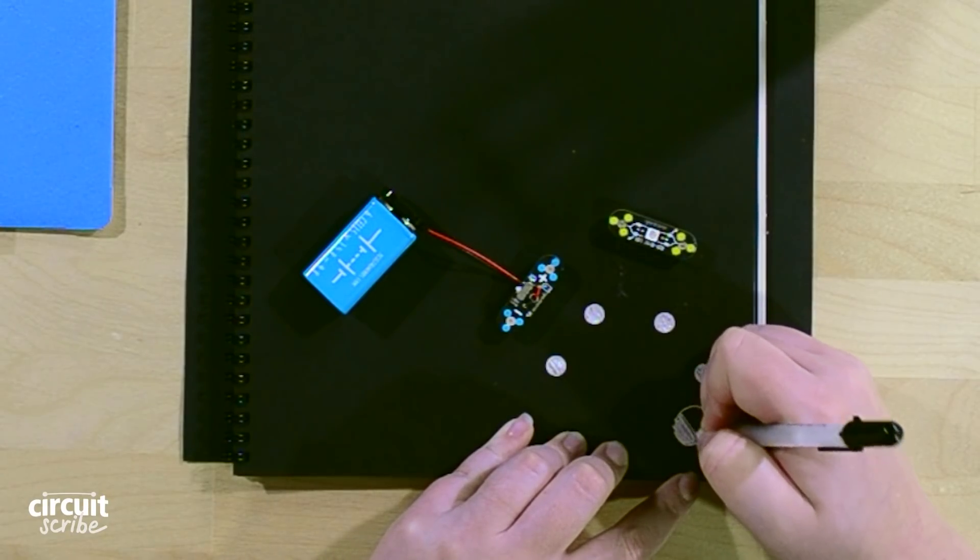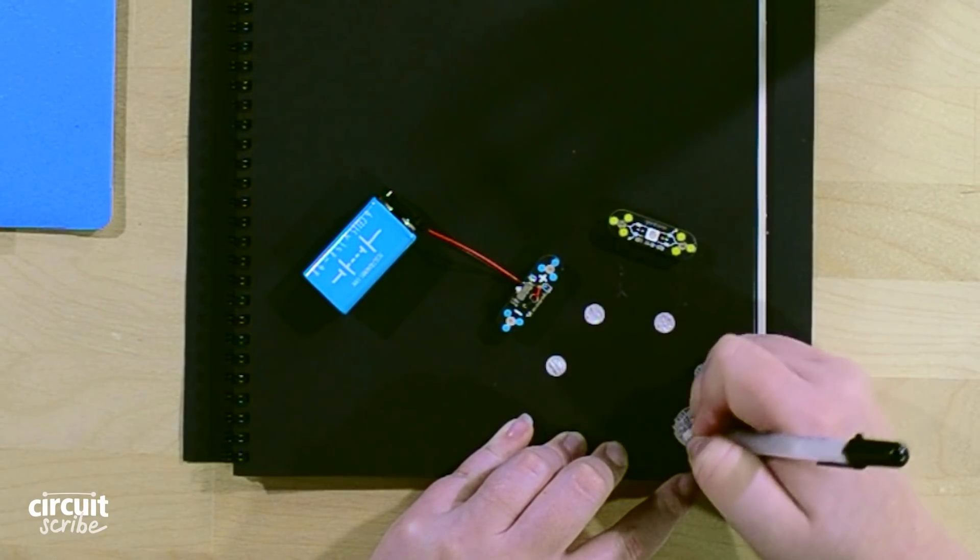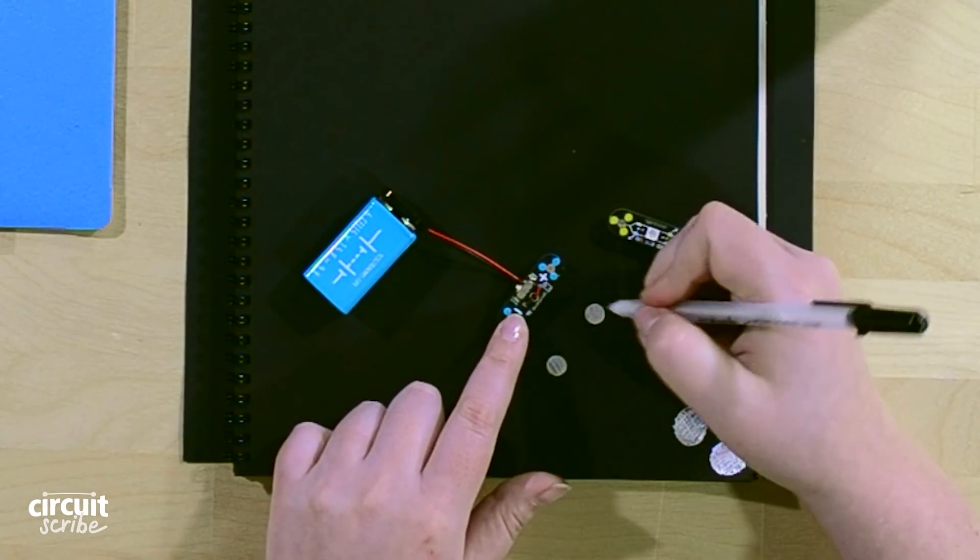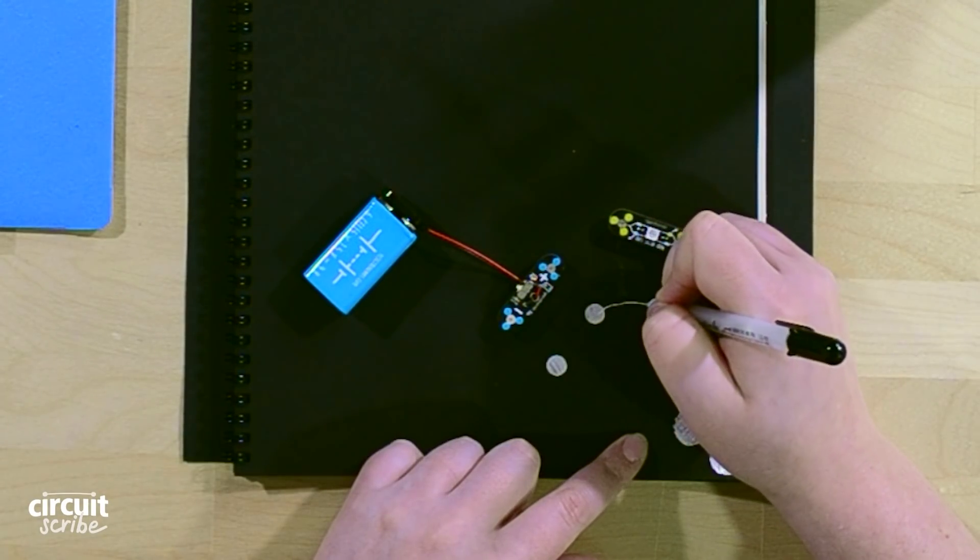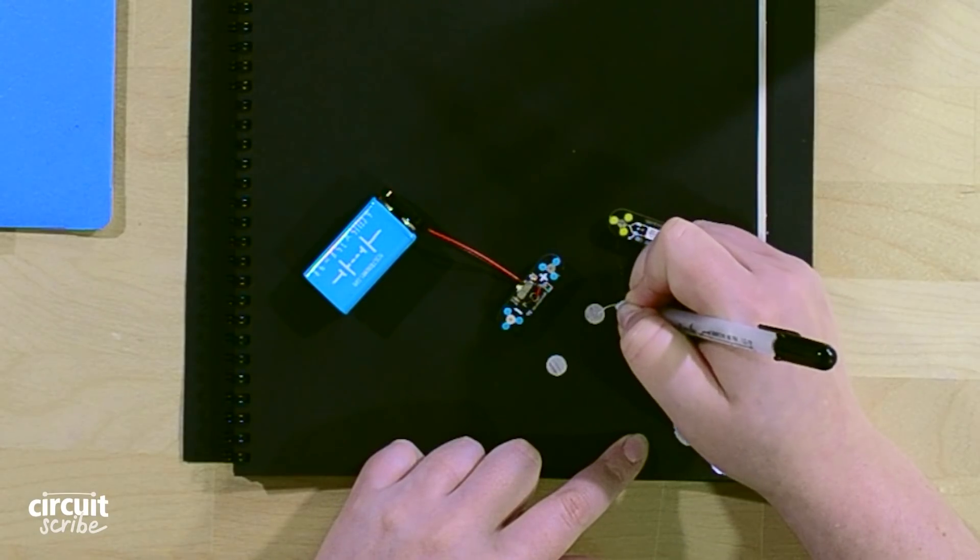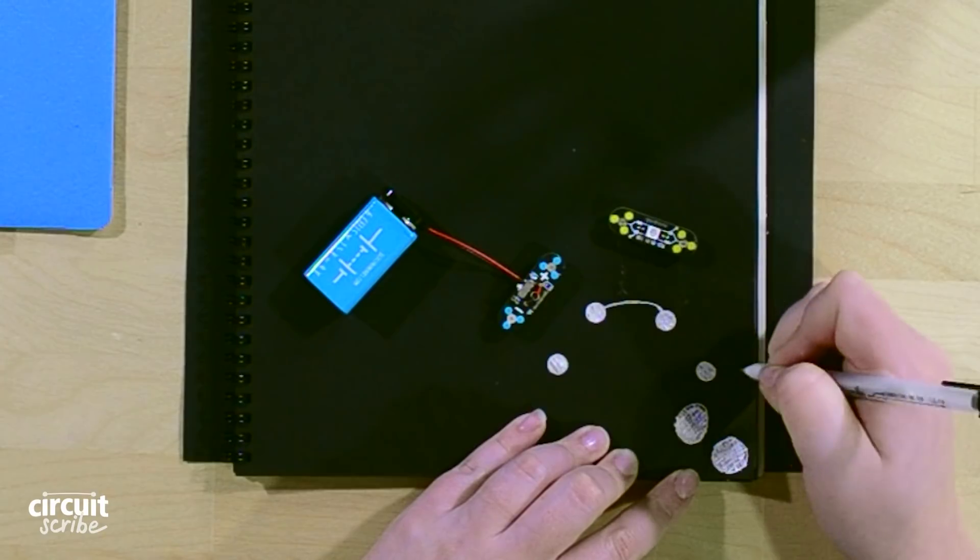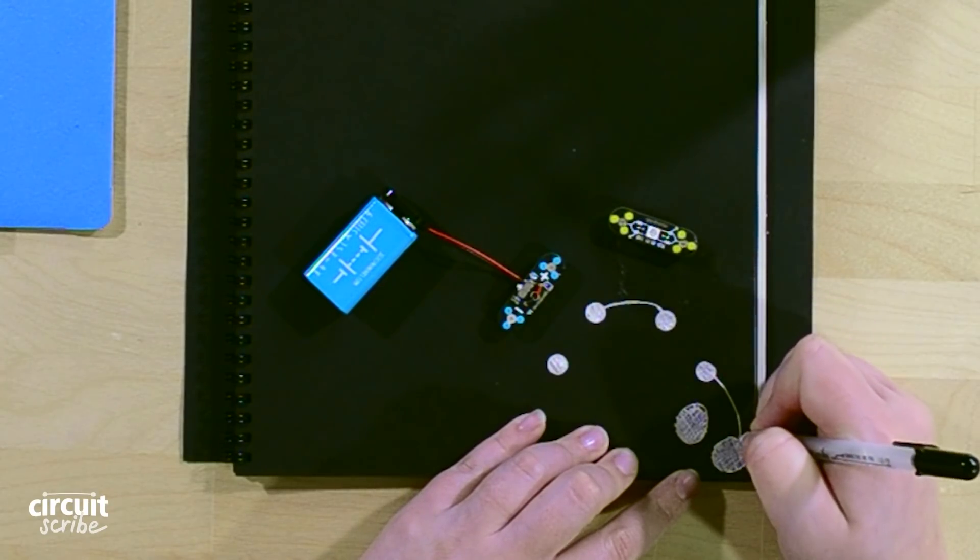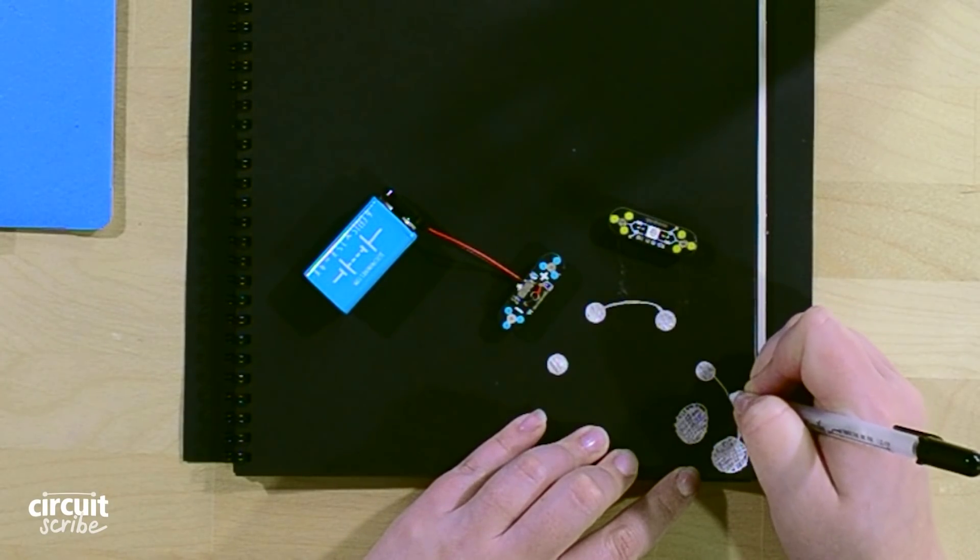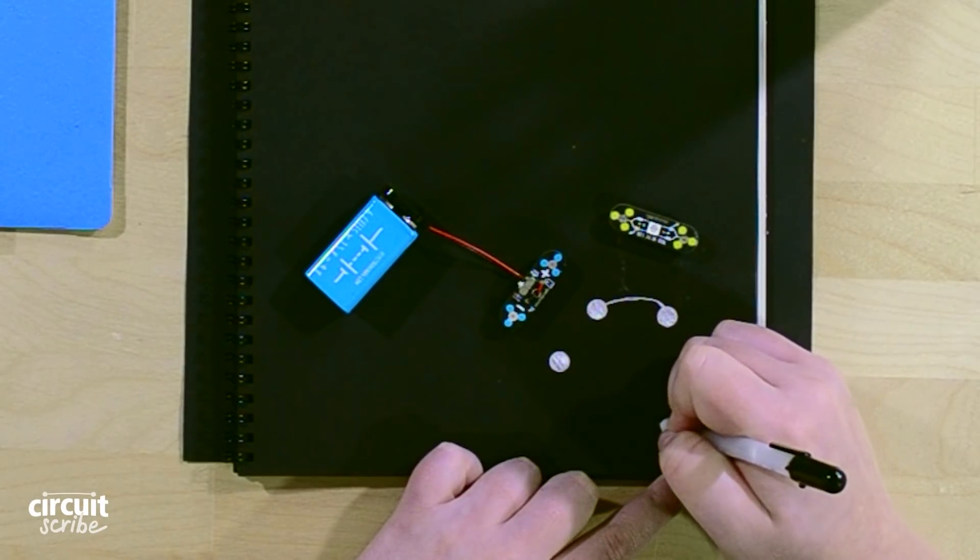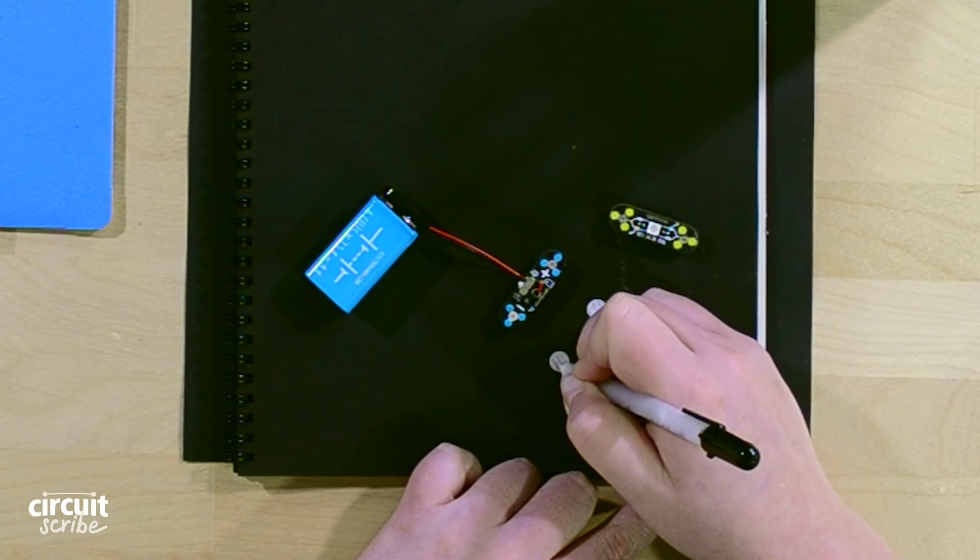So when the paper folds over, they will connect. Now I want to draw from the positive of where my battery goes to one side of my LED. Then I'm going to connect my LED, the other side of it, to one of these dots. I'm going to pick the top one.